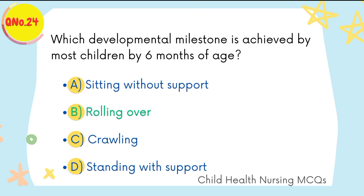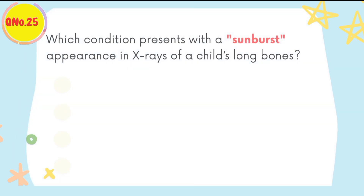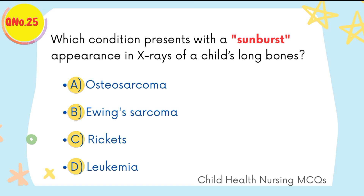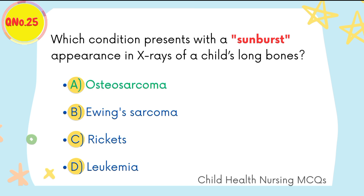B is the right option: rolling over. Question number twenty-five: which condition presents with a sunburst appearance on X-ray of a child's long bones? A is the right option: Ewing's sarcoma.